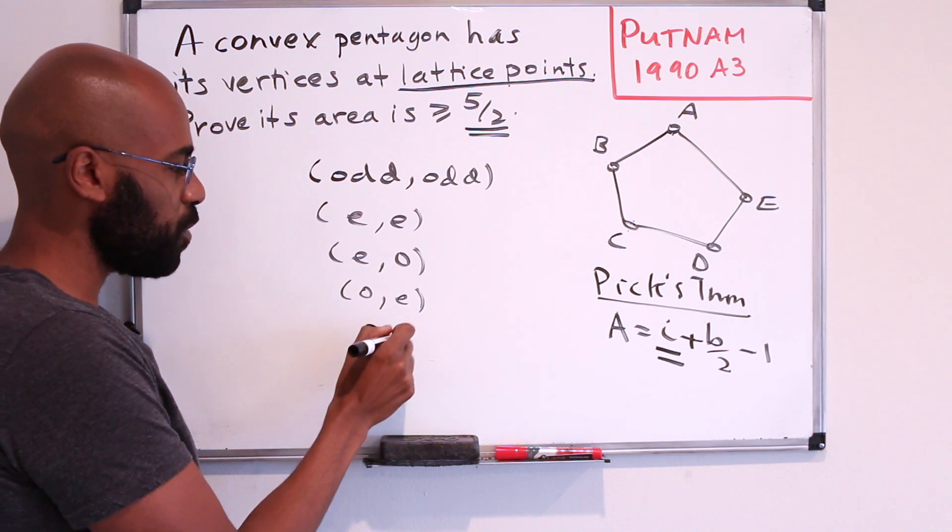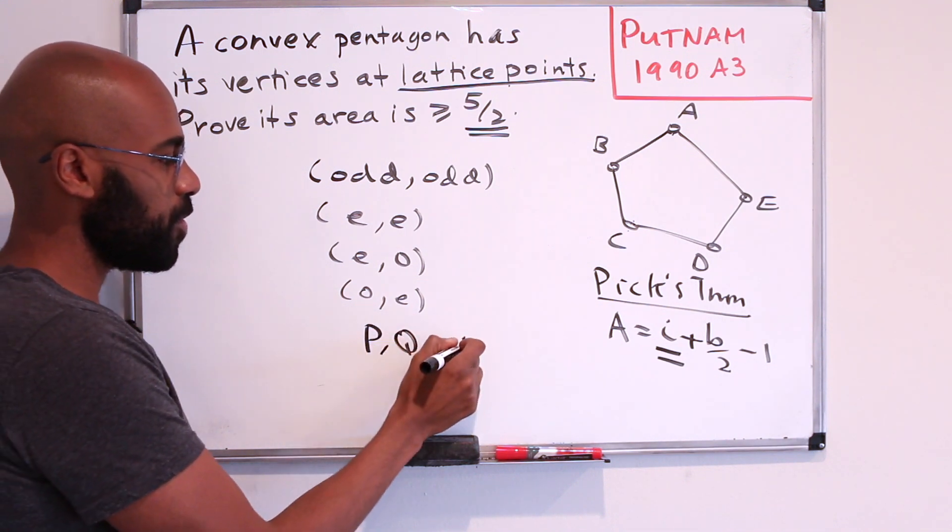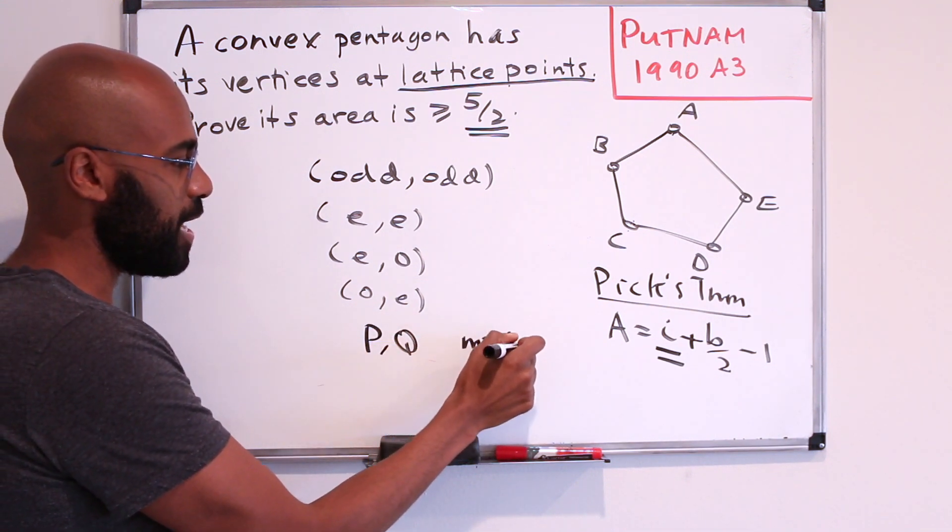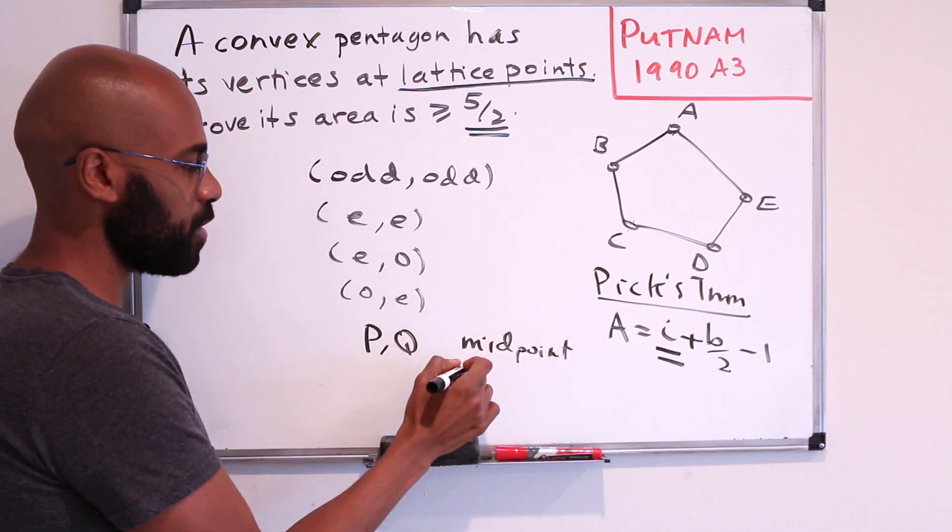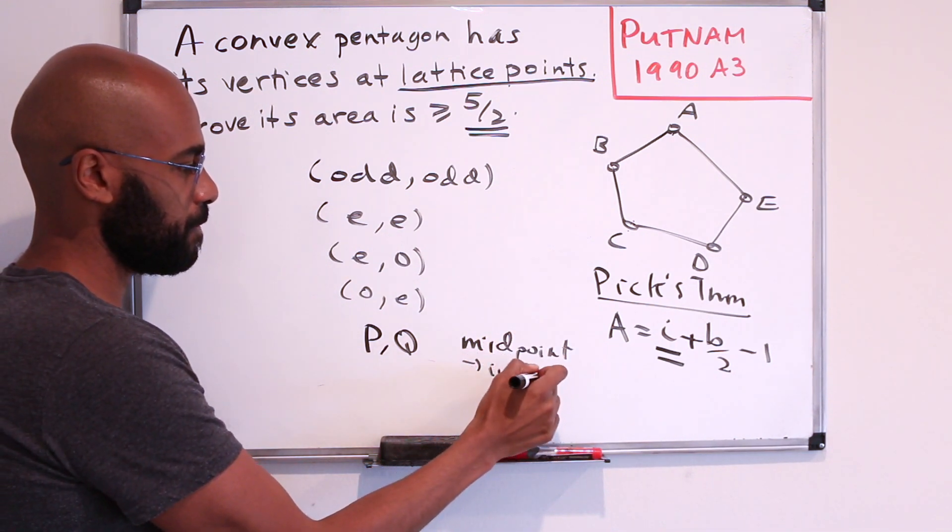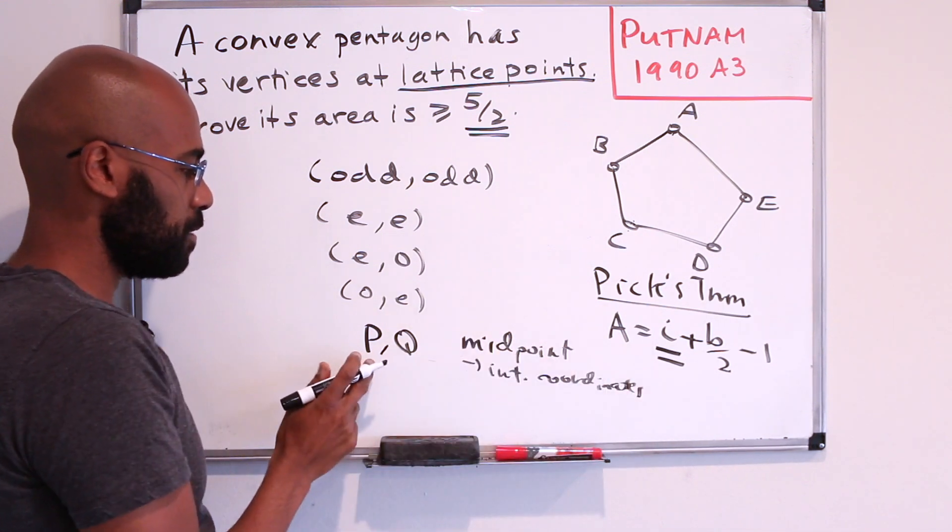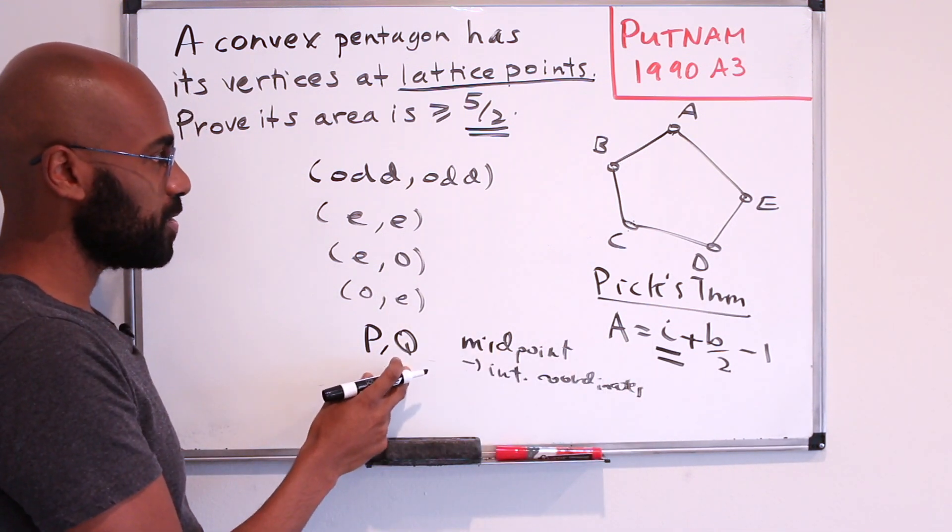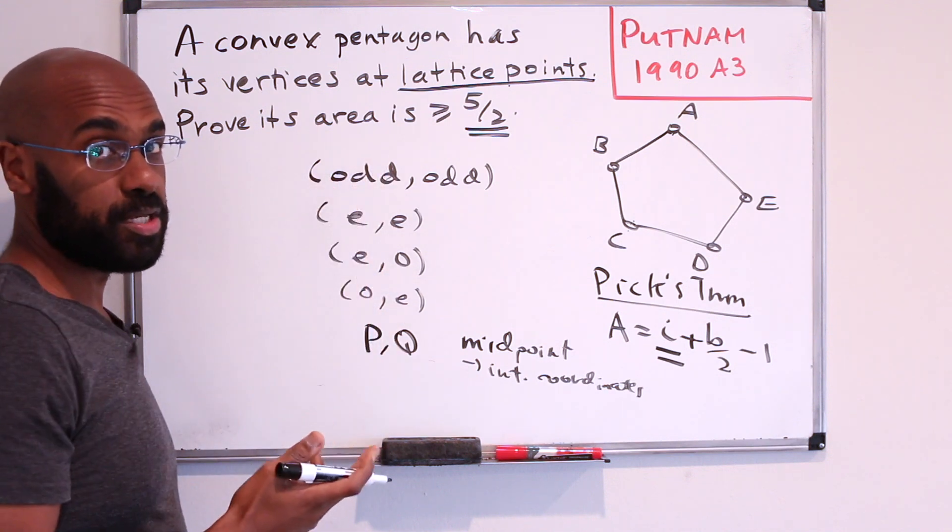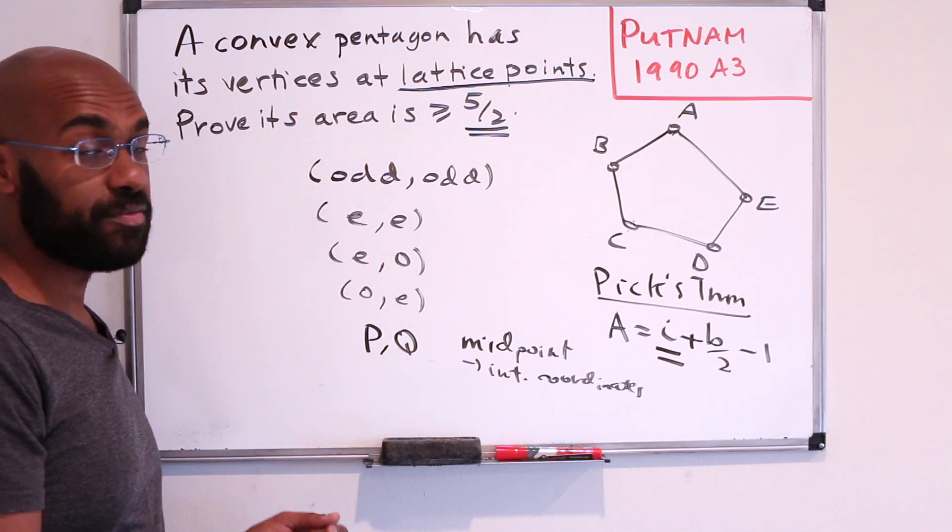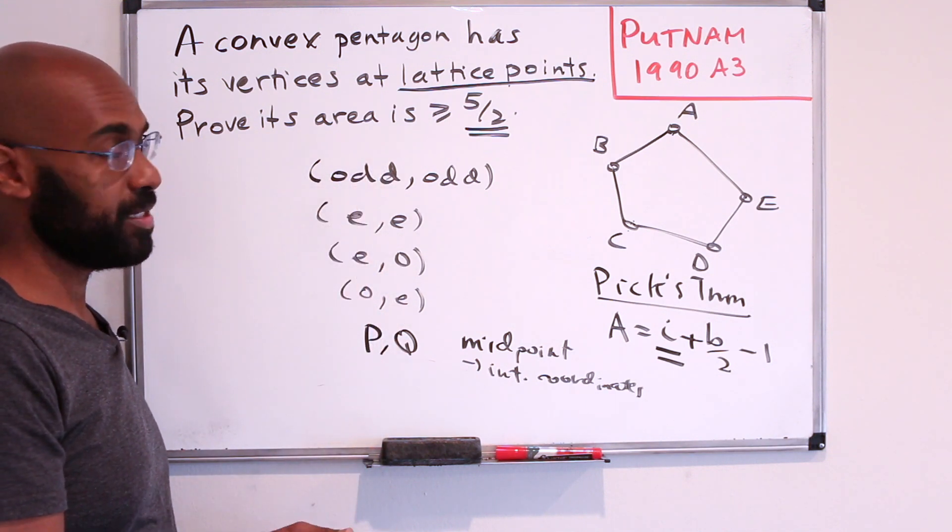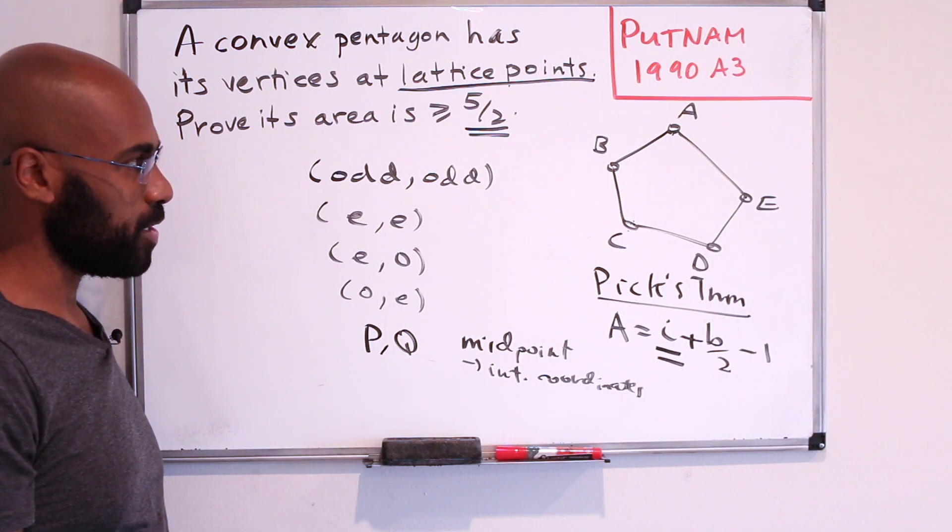As a consequence, whatever those two points are, let's say they're p and q, their midpoint will have integer coordinates. And the reason is because when we add the coordinates of these two points, because they have the same parity in each coordinate, the sum is going to be even in each coordinate. So half of that is going to be a point with integer coordinates.